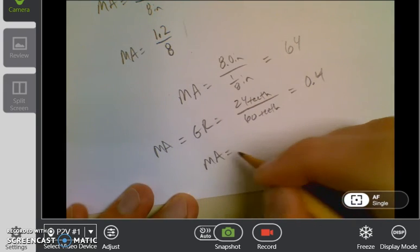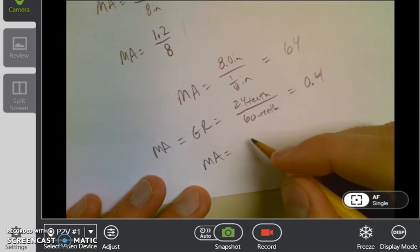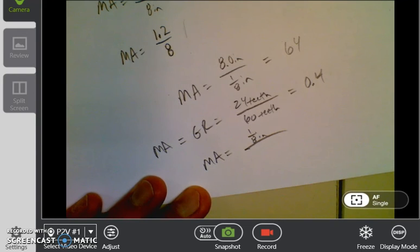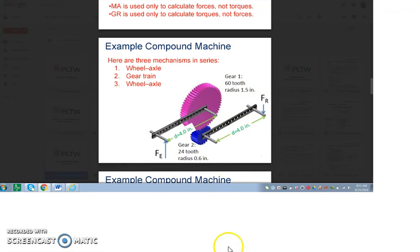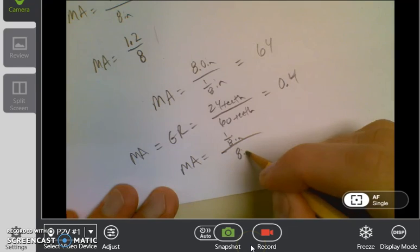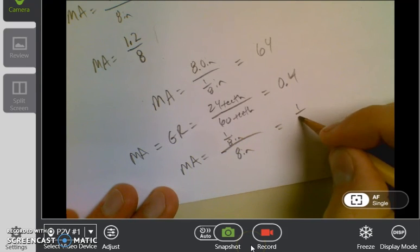And then your mechanical advantage of the third one, well, now you have an effort of one-eighth of an inch. If we go back to the picture right here, the force is now on this axle. So we've got a diameter of an eighth of an inch here going to a diameter of eight inches for this one, and that gives you 1 over 64.